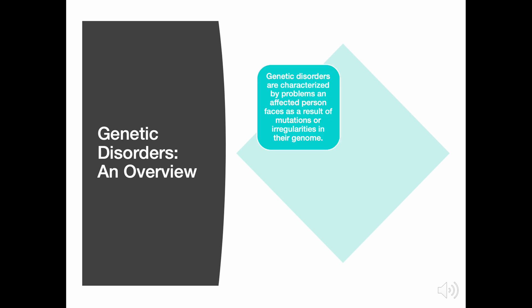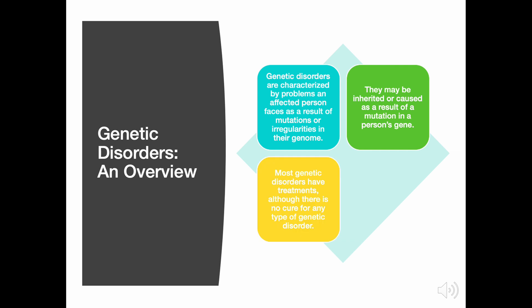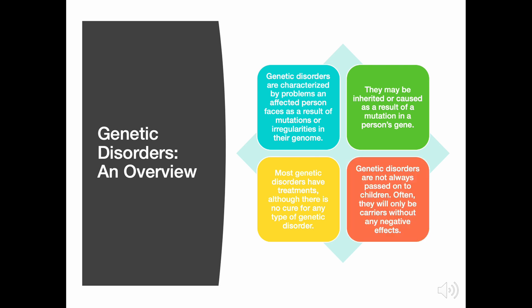Genetic disorders are characterized by problems an affected person faces as a result of mutations or irregularities in their genome. They may be caused or inherited as a result of a mutation in a person's gene. Most genetic disorders have treatments, although there is no cure for any type of genetic disorder. Genetic disorders are not always passed on to children — often they will only be carriers without any negative effects.